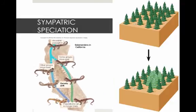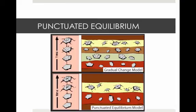Evolution has been based on the concept that it occurs slowly and gradually. Small changes add up over time to produce a new species, but the fossil record sometimes shows big changes that appear to occur in a short amount of time. Punctuated equilibrium is a theory of evolution that incorporates spurts of rapid change followed by long periods of little or no change — which is the equilibrium part.